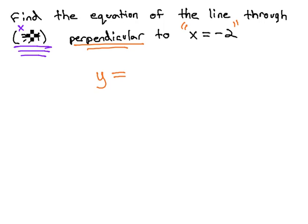Remember, 3, 4 is an x, y pair. If our equation is y equals, what is the y value of that point? The y value of that point is 4. This becomes the equation of our perpendicular line, y equals 4.